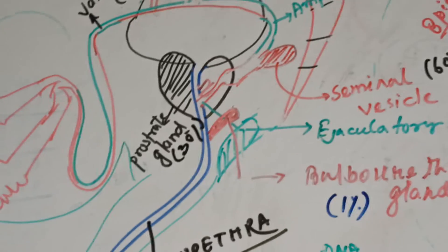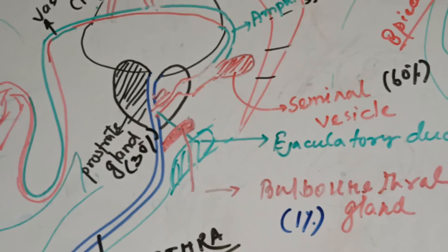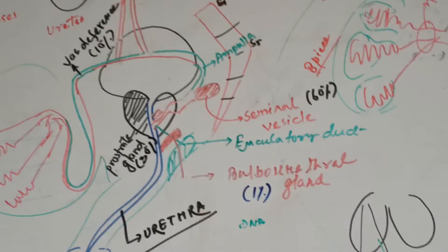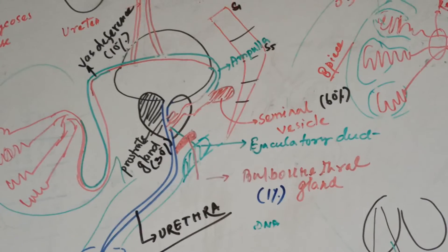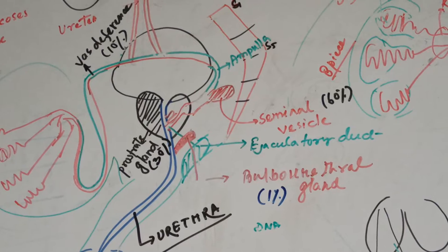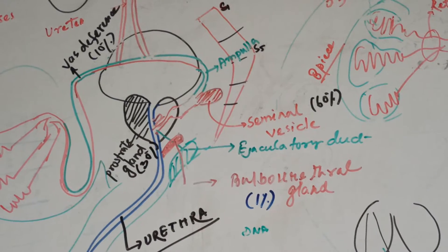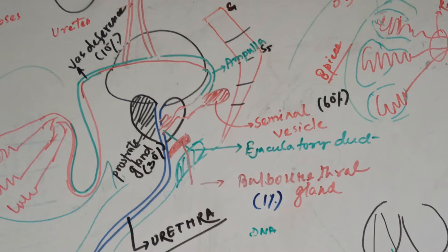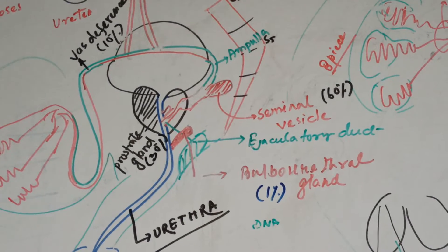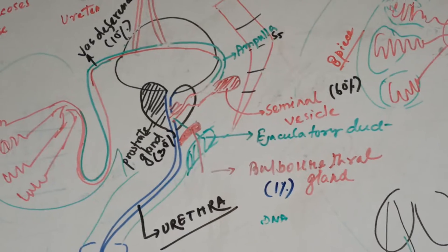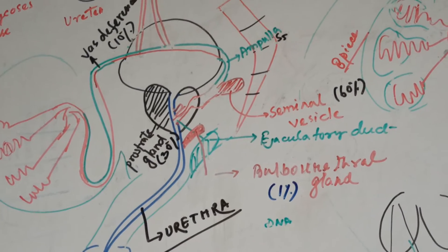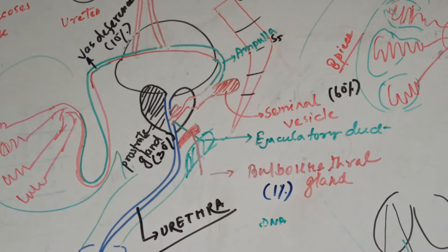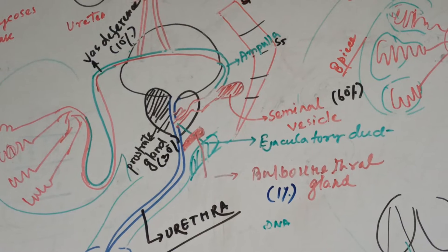It's a smooth muscle duct. This ampulla creates the seminal vesicles, and then you can see the ejaculatory duct ending in the urethral duct. Then there's a black colored prostate gland around the base of the urinary bladder at the point where the urethra is meeting the urinary bladder.